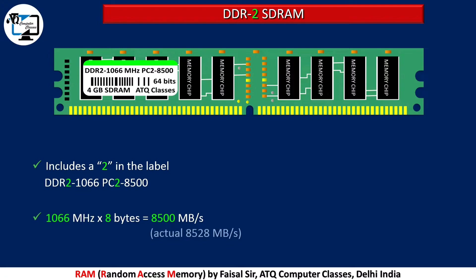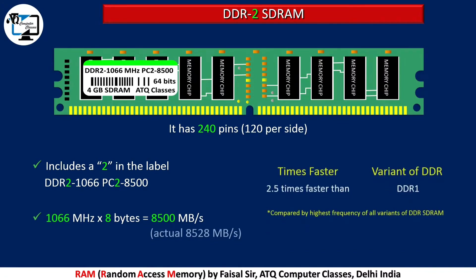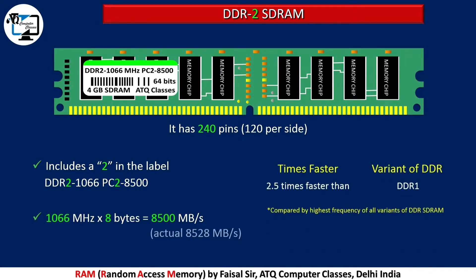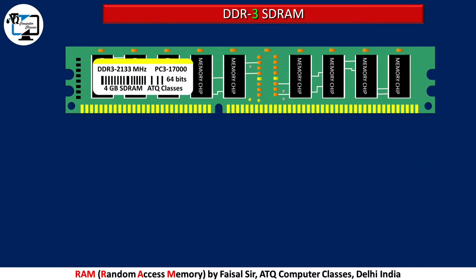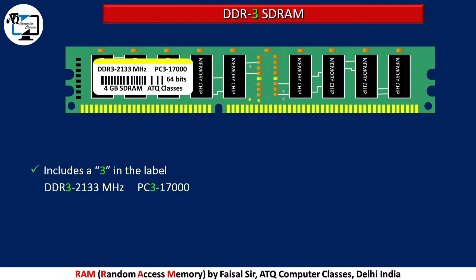The DDR2 bandwidth is rounded off to 8500 megabytes per second on the label to make it easy to read. It has 240 pins, with 120 pins per side, and is 2.5 times faster than DDR1. DDR3 includes a 3 in the label, for example DDR3-2133 and PC3-17000.